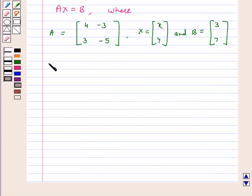Now determinant A is equal to minus 20 plus 9 which is equal to minus 11, that is not equal to 0. This implies A is non-singular.